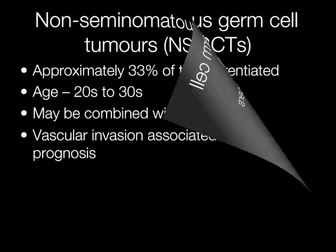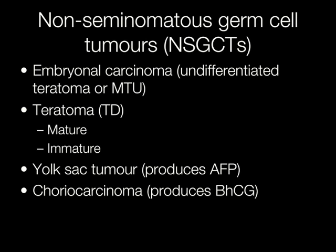Non-seminomatous germ cell tumours comprise a spectrum that ranges from the highly malignant undifferentiated embryonal carcinoma through to mature teratoma. In addition to embryonal carcinoma and teratoma, yolk sac tumour and choriocarcinoma may also be present. Embryonal carcinoma is the WHO term that has now superseded the old British term of undifferentiated teratoma, or MTU — that is, malignant teratoma undifferentiated.